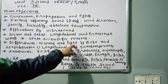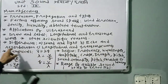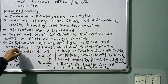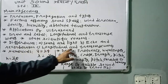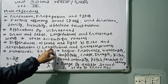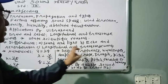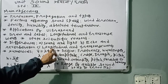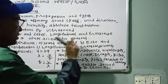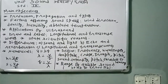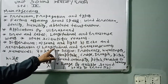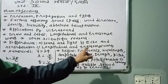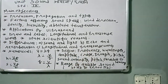Sound affects ears; light affects eyes. Sound speed is low compared to light speed, which is high. Echo and reverberation were learned in classes 7 and 8. Longitudinal waves travel in the same direction as particle motion in the forms of compressions and rarefactions; transverse waves travel in the perpendicular direction in the forms of crests and troughs.